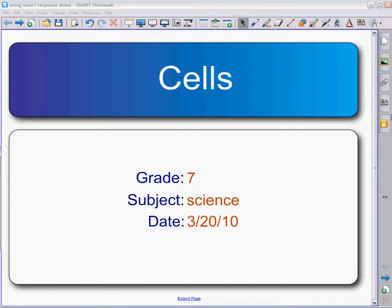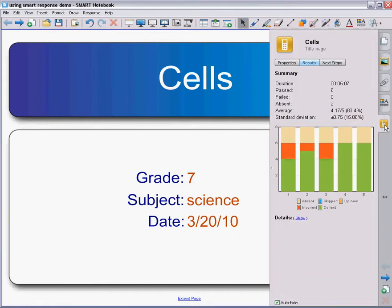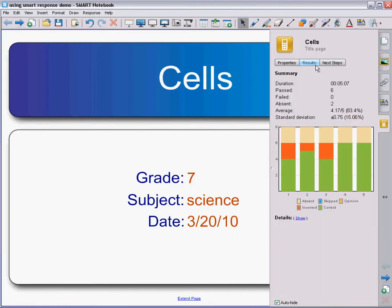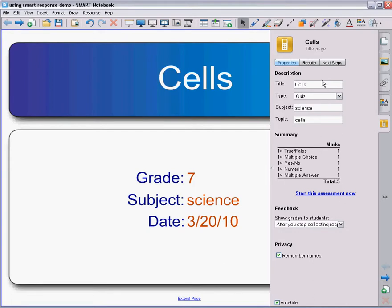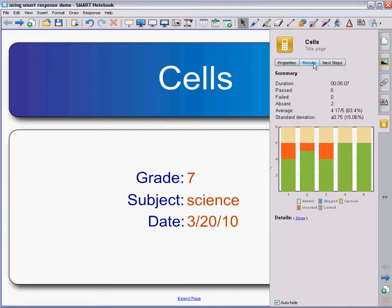If I'm back on the title page, I can look at the results of the entire quiz by clicking on the SMART tab, that middle tab right here. I've got the properties again, which tells me how many questions I have, but now I have results here.